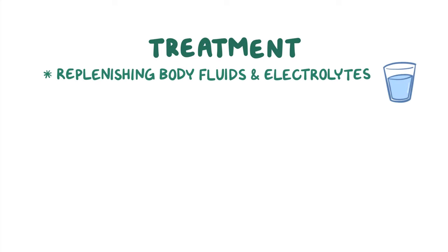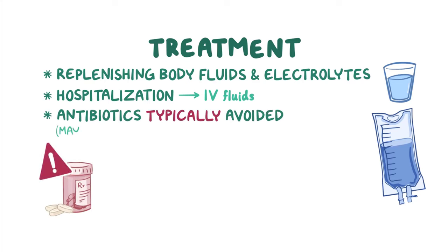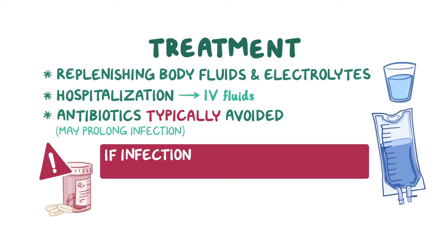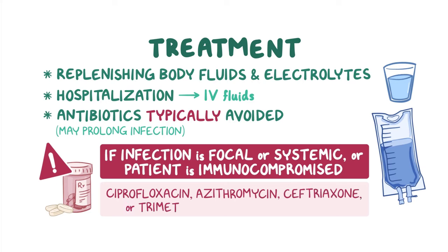Treatment for salmonellosis in people is focused mainly on replenishing body fluids and electrolytes to remedy dehydration. In some cases, hospitalization may be required to deliver fluids intravenously. Antibiotics are typically avoided because they may prolong the infection in less severe cases. However, if it is suspected that the salmonella infection is focal or systemic, or if the patient is immunocompromised, antibiotics such as ciprofloxacin, azithromycin, ceftriaxone, or trimethoprim sulfamethoxazole may be prescribed.